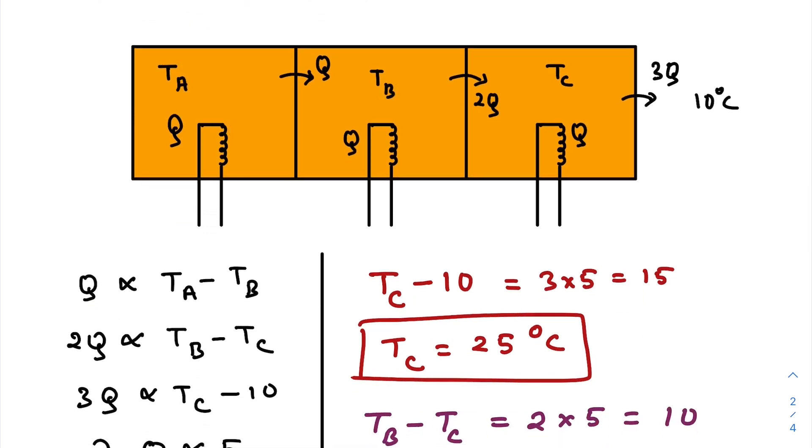Similarly in this chamber, Q amount of heat is coming from chamber A, Q amount of heat is created by chamber B, I mean the radiator B itself. That means influx of heat is 2Q. So equal amount of heat should go to chamber C away from chamber B, right? So 2Q amount of heat is being pushed from B to C, which is directly proportional to the temperature difference.